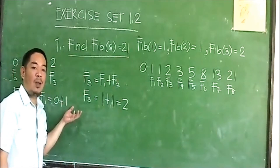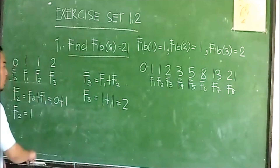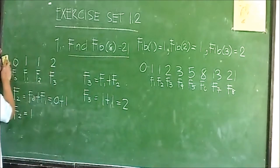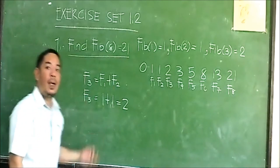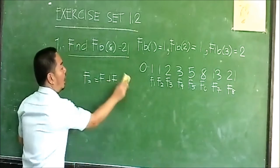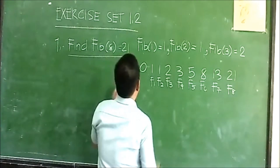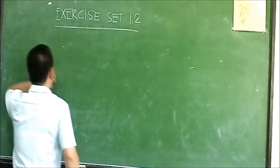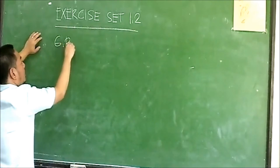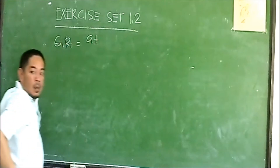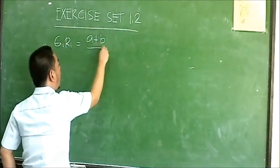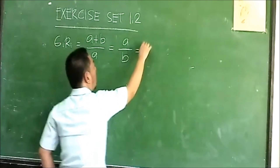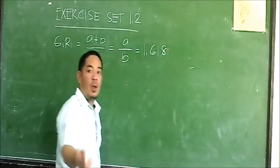I hope you understand the discussion through this online education technology. Next, we are going to discuss the golden ratio. This video will be uploaded to our YouTube channel so you can review it. The golden ratio is equal to (a plus b) over a, or equivalently a over b, which is approximately 1.618, as stated in your module.